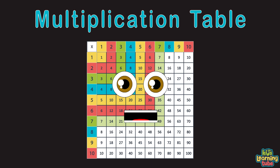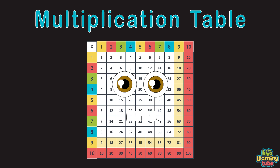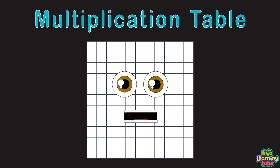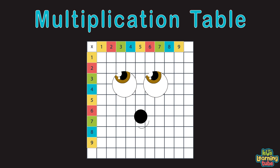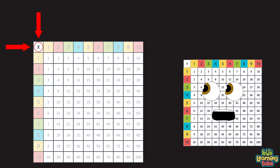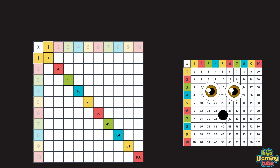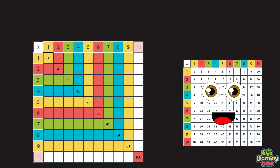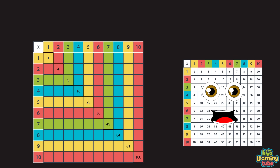I am the multiplication table. Remember me because you're able. We'll learn to multiply 1 through 10, up to 100 because you can. When we start at the x and count diagonally down, you'll find the answer to each number multiplied by itself without a frown.